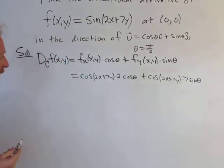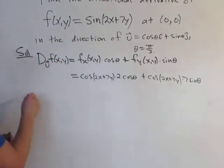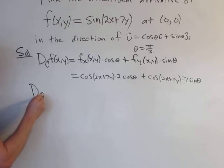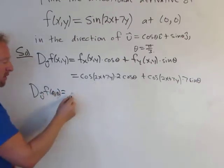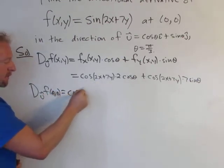So now we can go ahead and just plug everything in, and we should have the answer. So the directional derivative, which is going to be a number, at (0,0) is going to be, well, x and y are 0, so it's cosine 0 times 2.